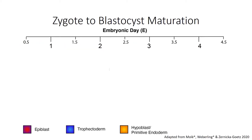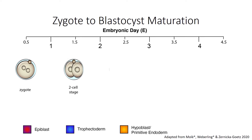Mouse embryonic development is counted in embryonic days, short E. As mice are nocturnal and matings take place during the night, midnight of the night of mating is assumed as E0.0. Upon fertilization, the zygote undergoes a series of cleavage divisions which lead to an exponential growth in cell number, reaching the two-cell stage at E1.5, the four-cell stage at E2.0, and the eight-cell stage at E2.5.